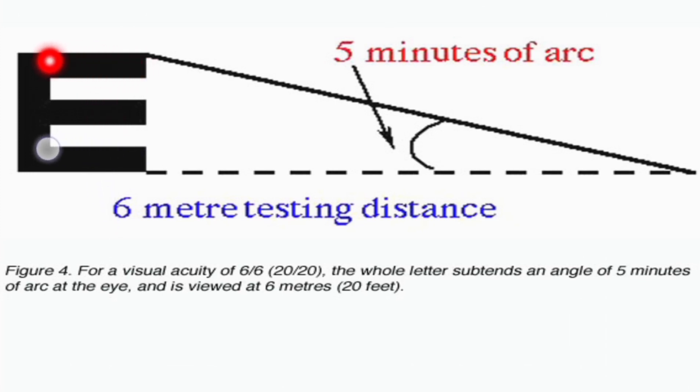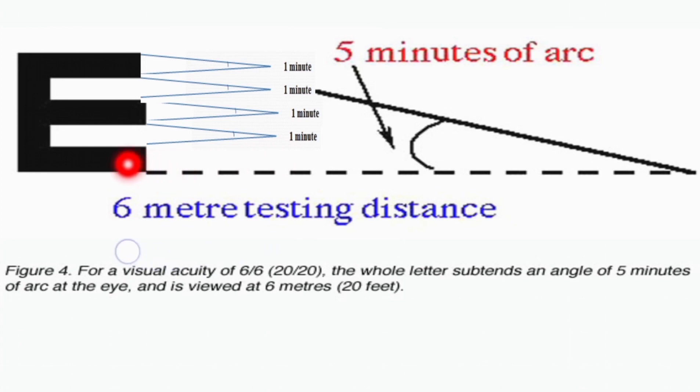Suppose this is a letter from the Snellen chart. It is designed in such a way that at a distance of 6 meters from the subject, this letter will subtend an angle of 5 minutes of the arc. And this letter is designed so that each of its limbs makes an angle of 1 minute. So the first limb of this letter E is making an angle of 1 minute. Then the space between its two limbs is again an angle of 1 minute. Then there is this limb, also 1 minute. Then the space between this limb and this limb is 1 minute. And the last limb is also 1 minute. So 1, 2, 3, 4, 5 - this whole letter is making an angle of 5 minutes of arc on the subject's eye.